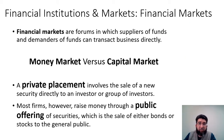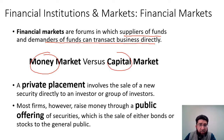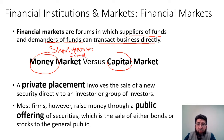Financial markets are platforms or forums in which suppliers of funds and demanders of funds can transact business directly. There are two types of markets: the money market and the capital market. The money market is a short-term fund market, while the capital market is a long-term fund market.